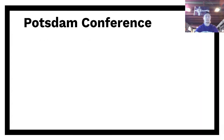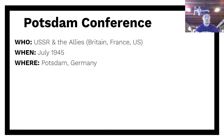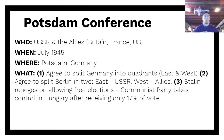The second conference is the Potsdam Conference — again, the USSR and Allies — this time in July 1945, a couple months later, taking place in Potsdam, Germany. Three main things happen here. One, they agreed to split Germany into quadrants. With four parties at the meeting — the Soviet Union, Britain, France, and the United States — there are four quadrants, one for each.